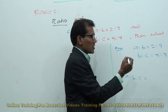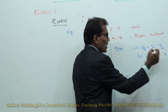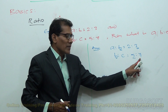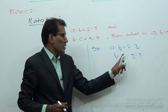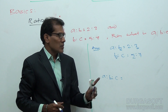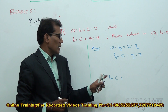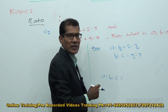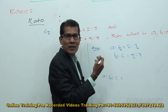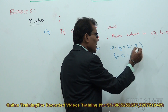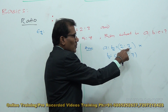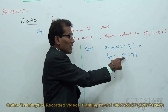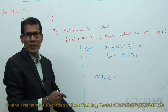In A is to B, B's corresponding value is 3, but in B is to C, B's corresponding value is 5. So when writing A is to B is to C, what value do we take for B? Here B is different in both cases, so we cannot take 3, we cannot take 5. To take the value of B in both places, the number should be the same. To make this B value equal in both cases, we multiply the first ratio by 5 and the second ratio by 3 — making B equal to 15 in both.